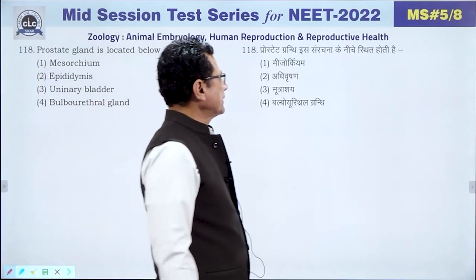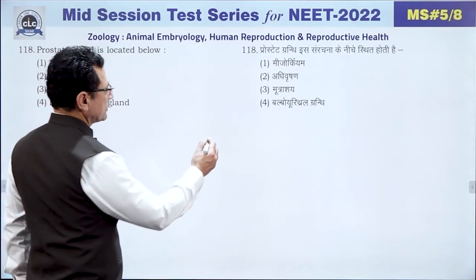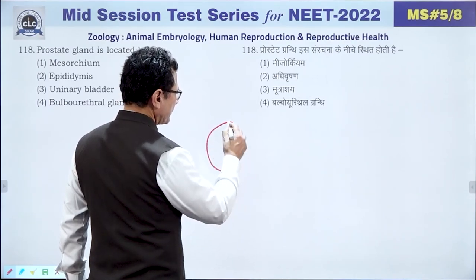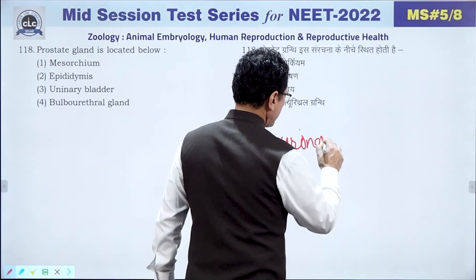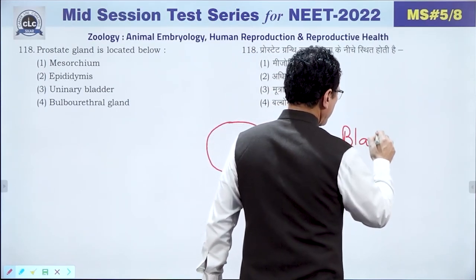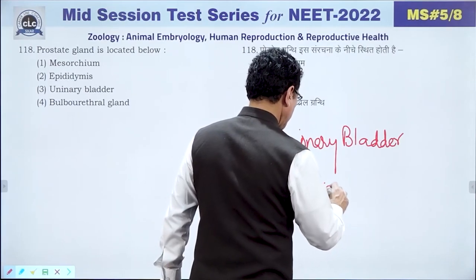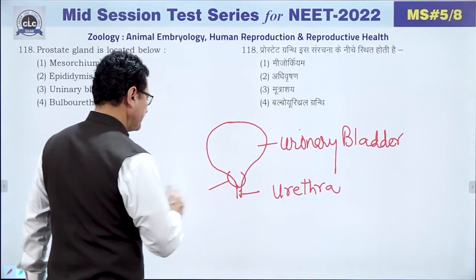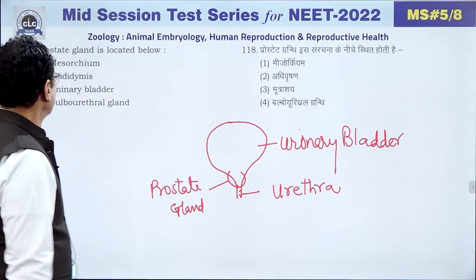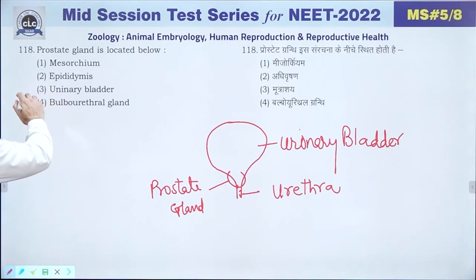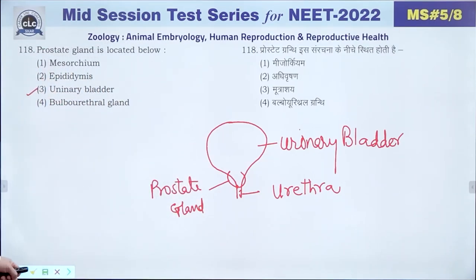Question 118: The prostate gland is located below the urinary bladder, surrounding the urethra at its neck. In Hindi it is called 'purush granthi.' The answer is 3.